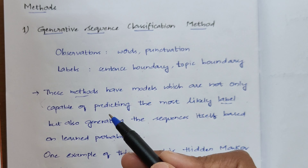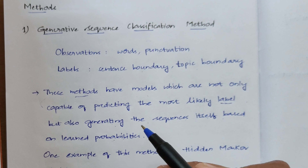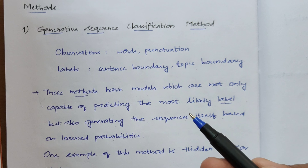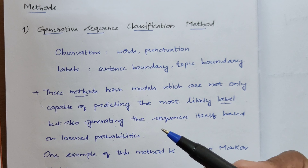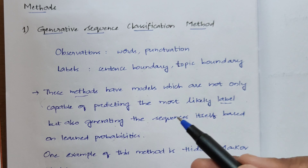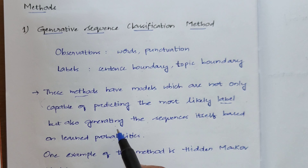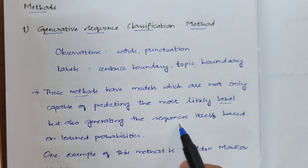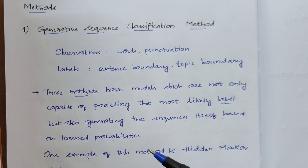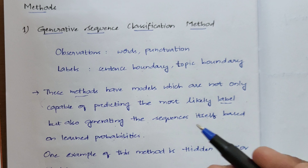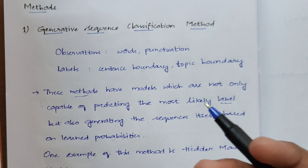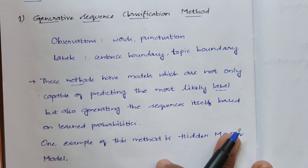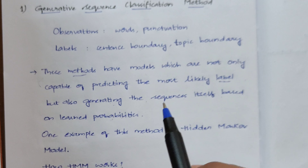These methods are first trained with particular examples, and then whenever a new sentence is given, they predict the labels of that new sequence based on the previous examples. At the same time, they can also generate new sequences — new sentences — from whatever examples you have given. So if you ask the system to generate new sequences from your examples, it will do so.